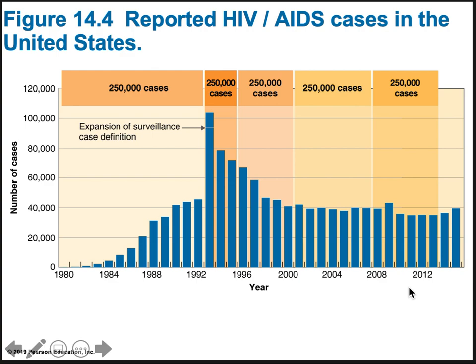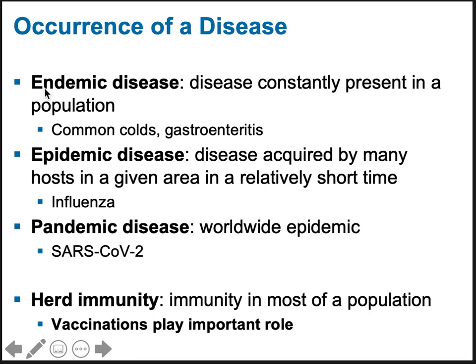This is a good introduction to epidemiology — looking at trends, looking at the spread of disease, and working to prevent it. An endemic disease is something that's always present in a population, like colds. You can get a cold any time of the year. Gastroenteritis — sudden onset of nausea, vomiting, and/or diarrhea and cramping — is also always present.